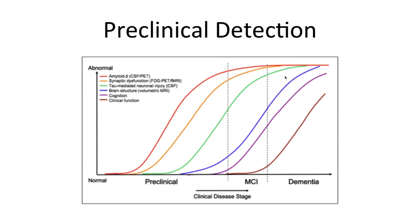Prior to discussing these three neurodegenerative diseases in more detail, it's important to understand that many neurodegenerative changes occur well before clinical manifestation of the disease. In Alzheimer's disease, it's well accepted that certain changes happen before observable behavioral and cognitive changes interfere with normal functioning — at which point the criteria for Alzheimer's disease could be met. Researchers are beginning to understand the importance and influence of biomarkers early in the disease stages, well before symptom expression.